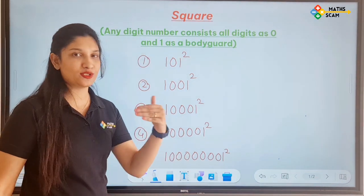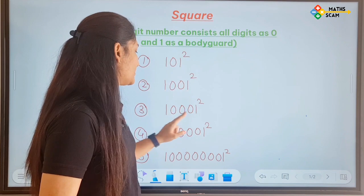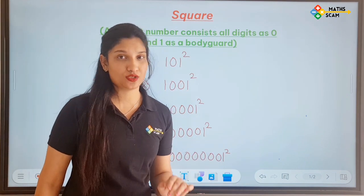So these are the questions. To aapko samaj geya ho ga quonsa type of questions hai. The first and last digit is 1 and middle numbers are 0's.